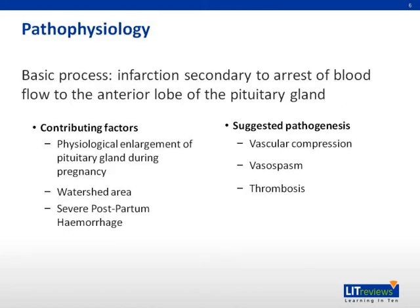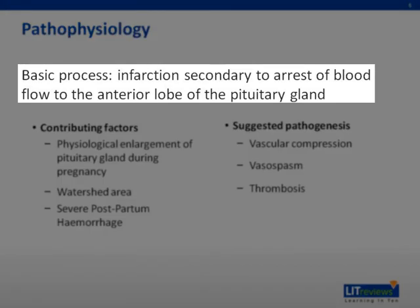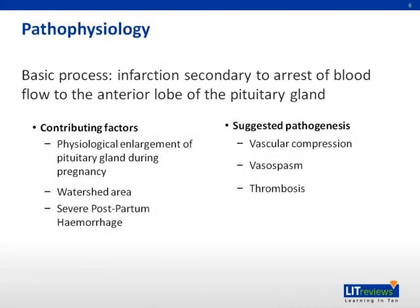The pathogenesis of Sheehan's syndrome is not totally certain, although there is no doubt that the basic process is infarction secondary to the arrest of blood flow to the anterior lobe of the pituitary gland. Towards the end of pregnancy, the pituitary gland is significantly enlarged, mainly from hyperplasia of prolactin-secreting cells. An overall increase of 136% in the volume of the pituitary gland on MRI was reported. However, the blood supply to the anterior pituitary remained the same — from the superior hypophyseal artery, a low-pressure portal system which makes it a watershed area.